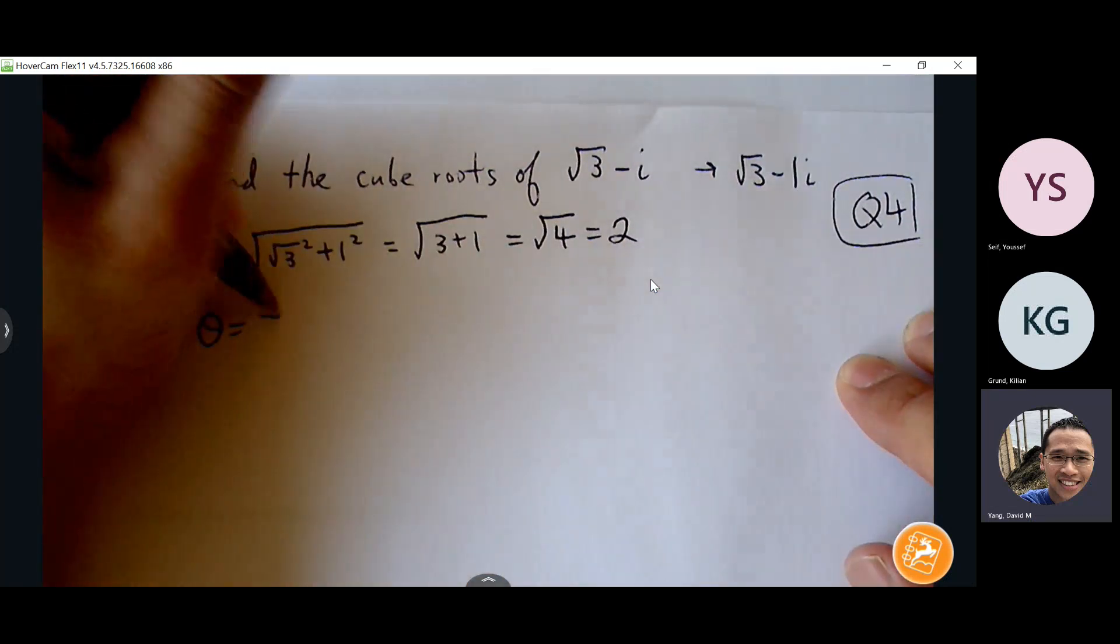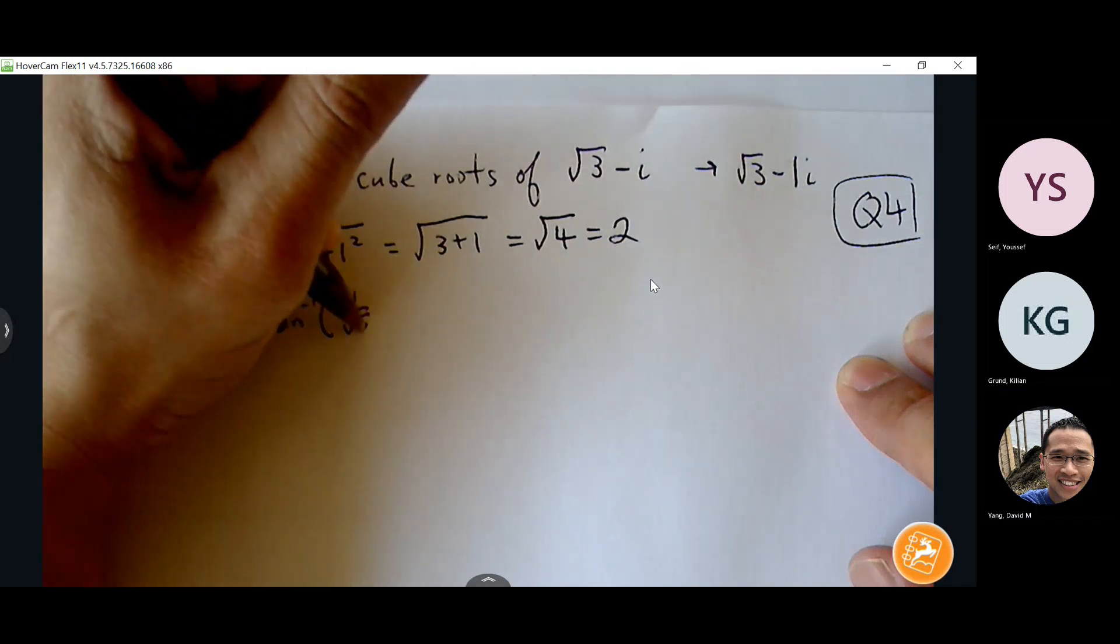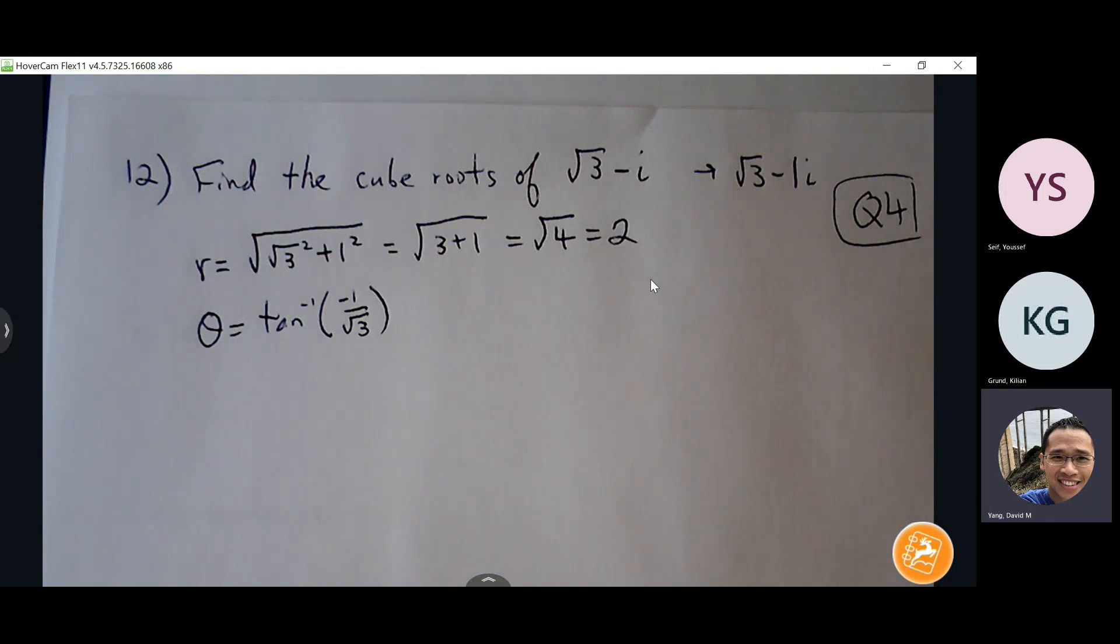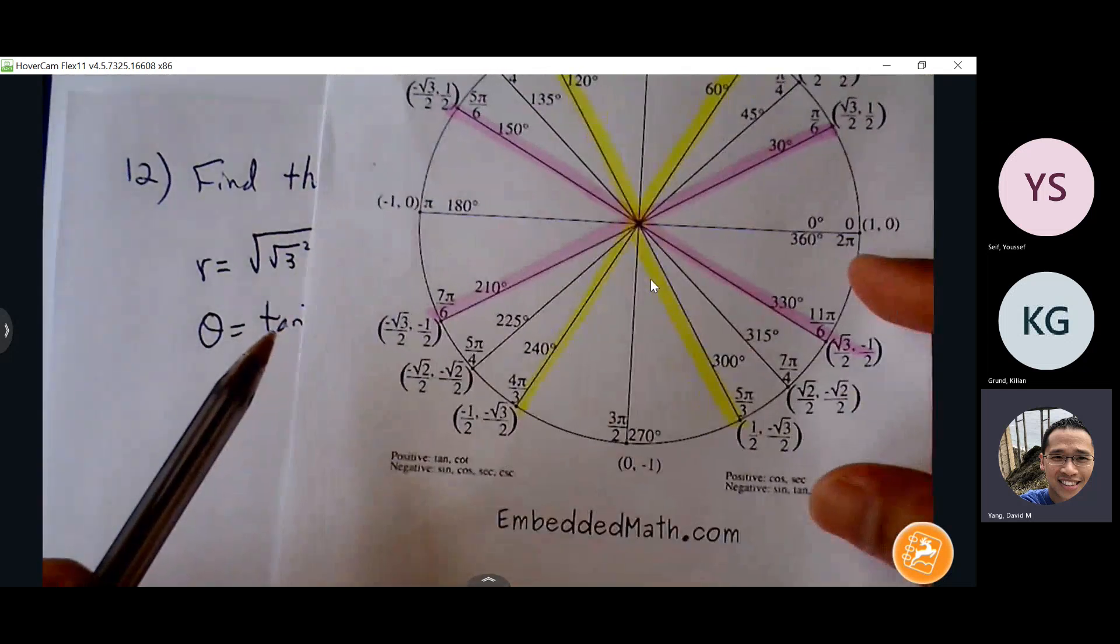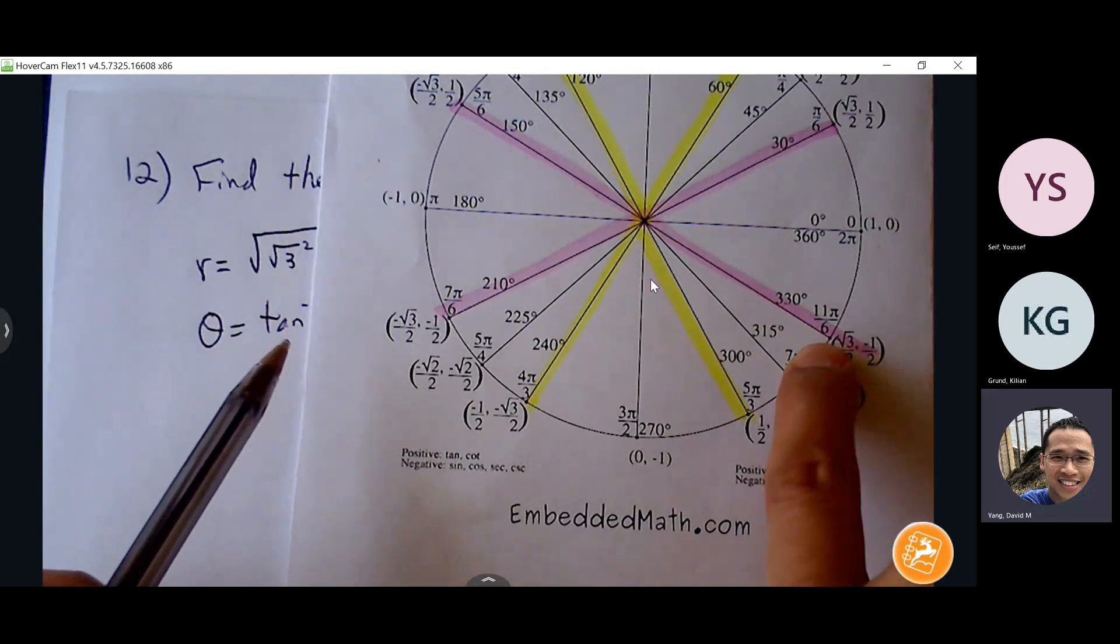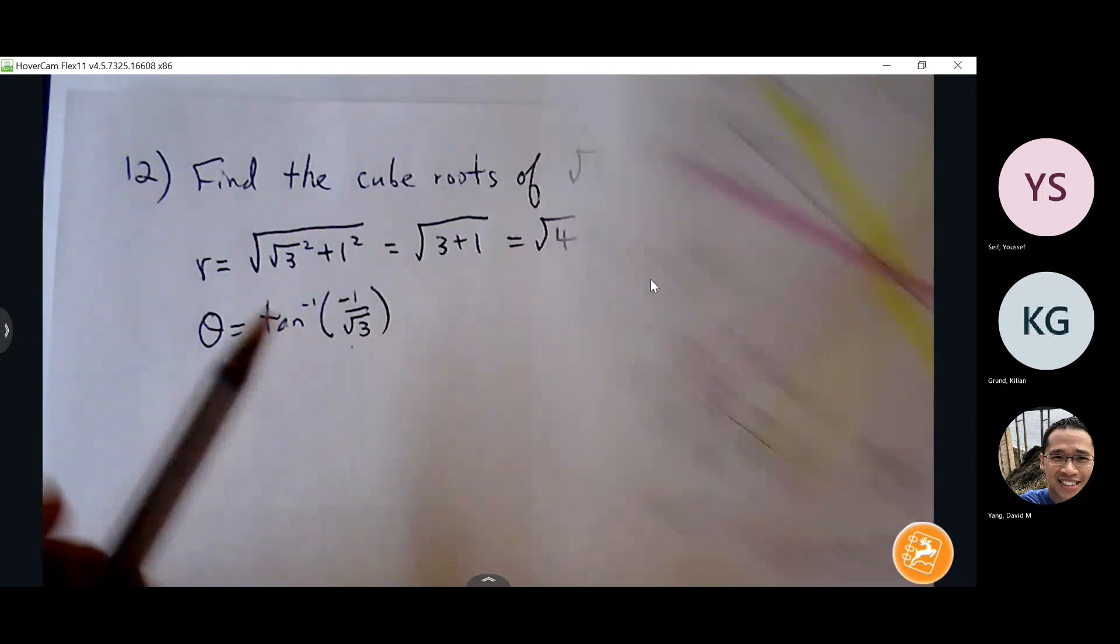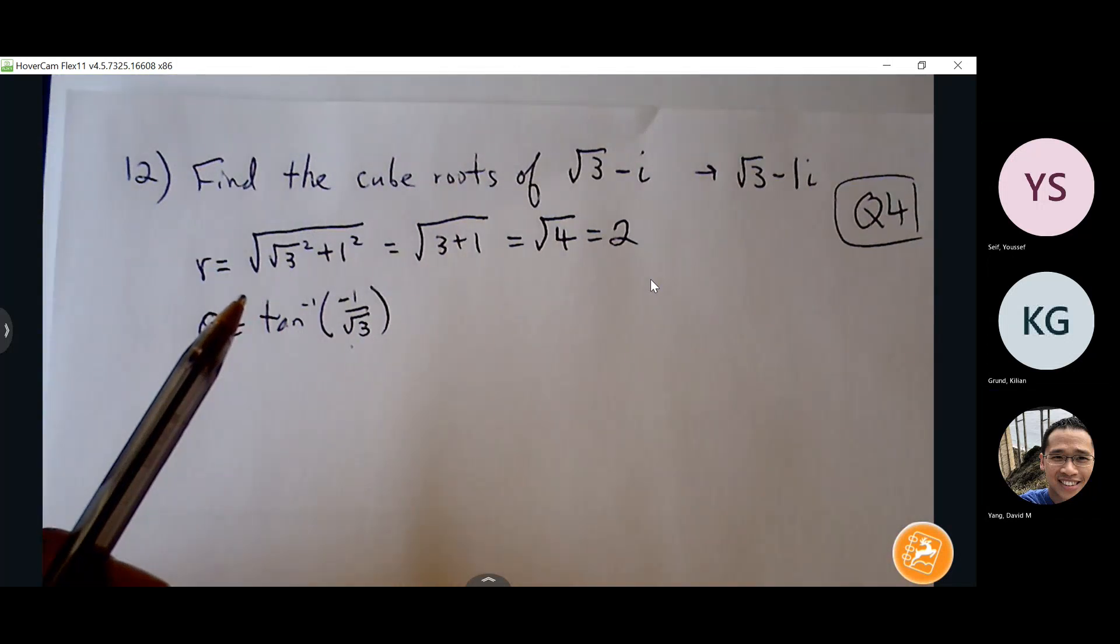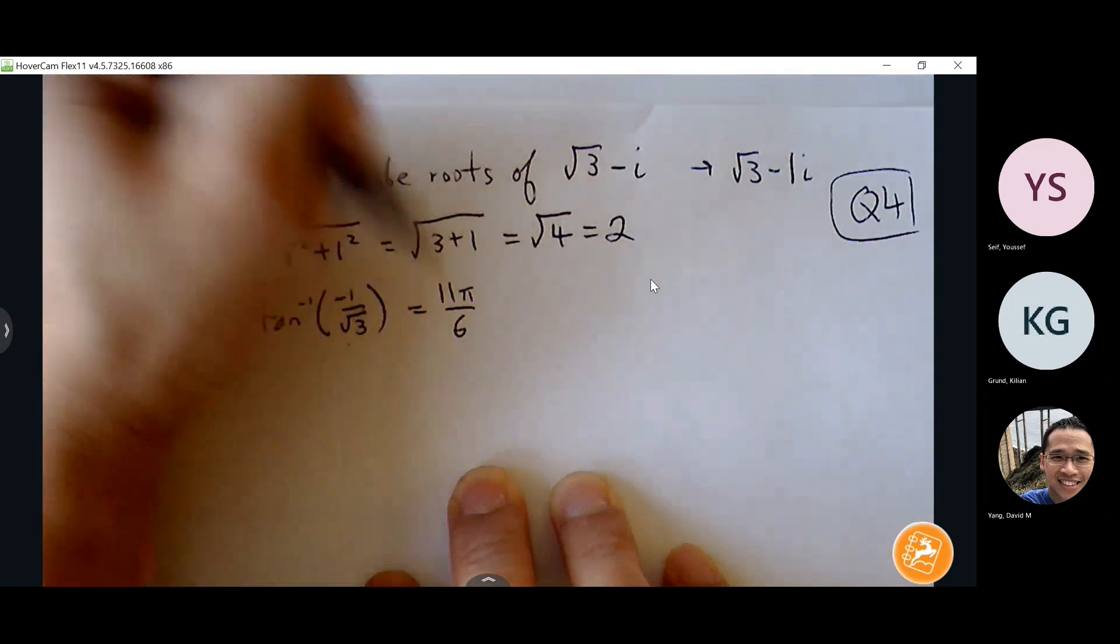Okay, so theta is equal to inverse tangent of b over a, right, this is the unit circle value, inverse tangent of negative 1 over root 3, this is y over x, so if I look at a unit circle here, negative 1 over root 3, that's going to be y over x, that's going to be 11 pi over 6. So if I cover up the 2, it's just negative 1 over root 3.